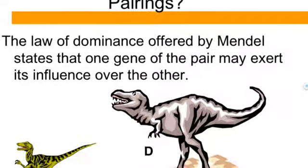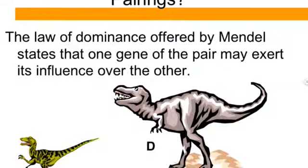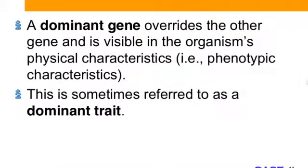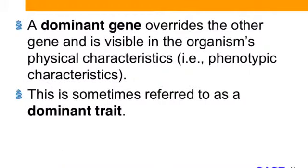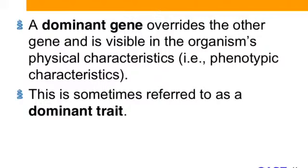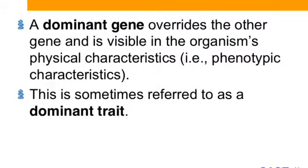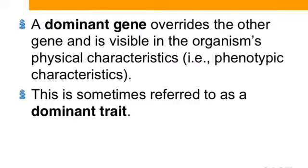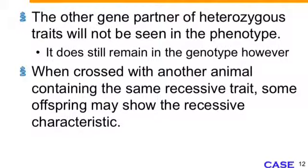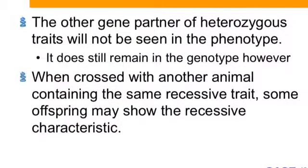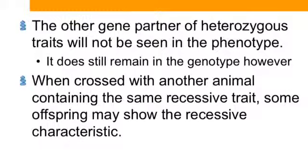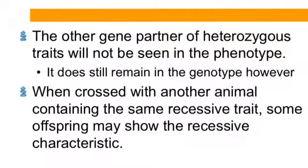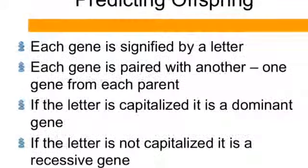If we breed a dominant trait with a recessive trait — dominant is the big D and recessive is the little d — the law of dominance that Mendel came up with states that one pair may exert its influence over another. A dominant gene overrides the other gene and is visible in the organism's physical characteristics, often referred to as a dominant characteristic. The recessive gene, the other partner in a heterozygous pair, will not be seen in the phenotype — it's still there, we just don't see it. When crossed with another animal containing the same recessive trait, some offspring may show the recessive characteristic.